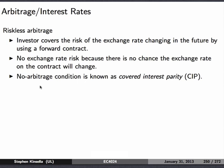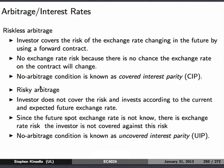We need to talk about how arbitrage affects interest rates. With riskless arbitrage — where you know for a fact that you can make a riskless profit — an investor will cover the risk of the exchange rate changing in the future by using a forward contract. There's no exchange rate risk because there's no chance the exchange rate on the contract will change. This is called covered interest parity — there wouldn't really be a foreign exchange market if this actually existed. Risky arbitrage is obviously closer to real life: you don't cover that risk, you invest according to the current and expected future exchange rate. Since the future spot rate is not known, there's exchange rate risk and you're not covered. This is called uncovered interest parity.